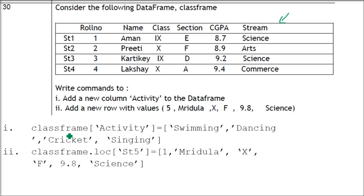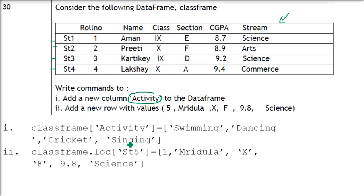In class_frame, you write the new column name 'activity' in square brackets, then assign values. There are four rows, so you provide four values — for example: swimming, dancing, cricket, singing. You can change any of these as they are just for reference.